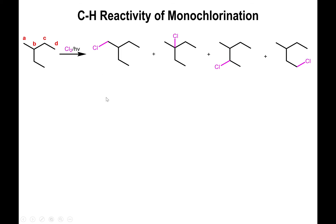To determine the products, simply place the chlorine bond at each unique carbon position. You have chlorine attached to position A, position B, position C — and note that even though chlorine is drawn at two equivalent carbons, these represent the same product type C — and position D. Those are the four possible monochlorination products. Experimentally, the yields are: 13% of type A, 17.4% of type B, 43.5% of type C, and 26.1% of type D.